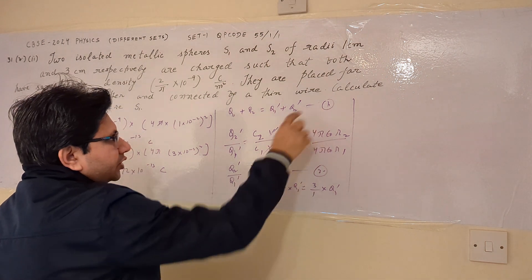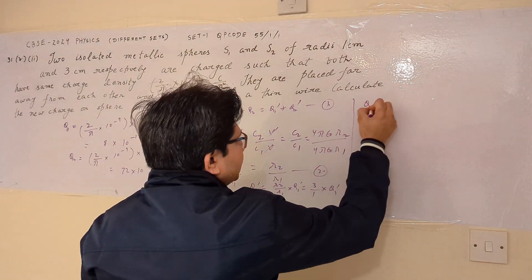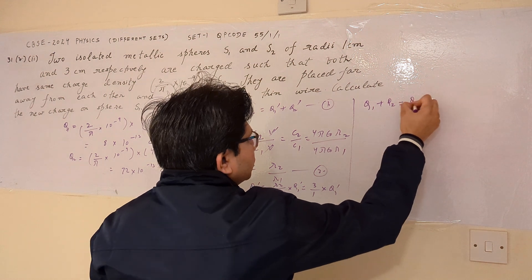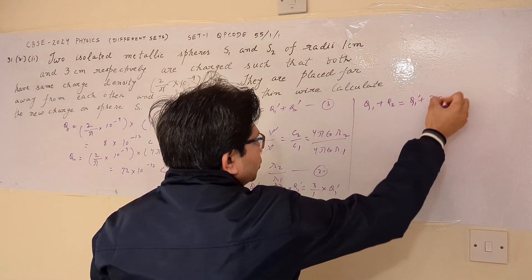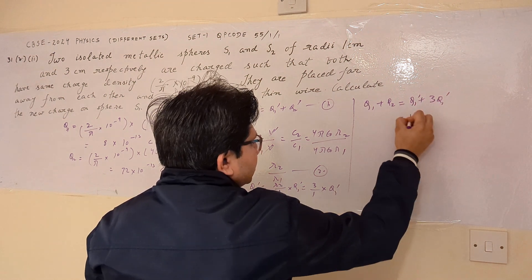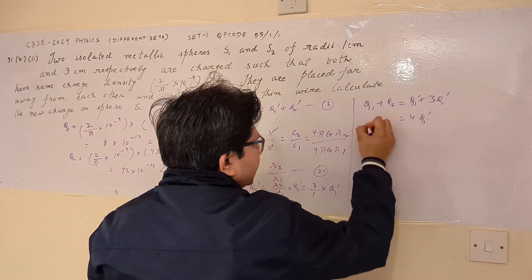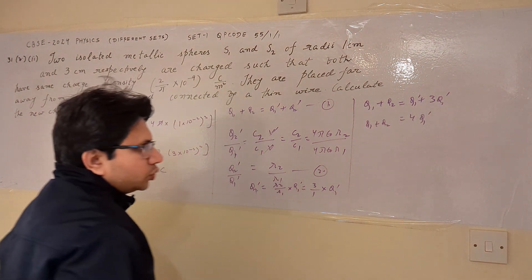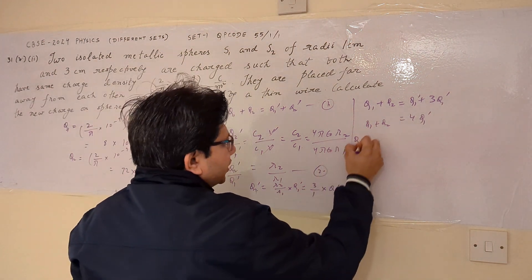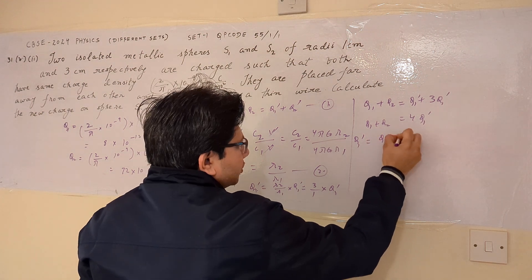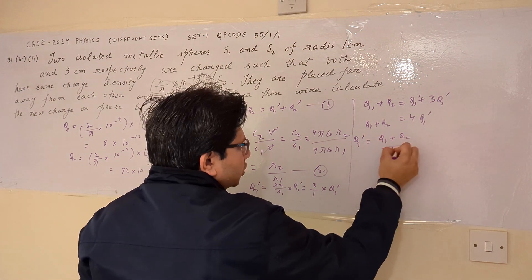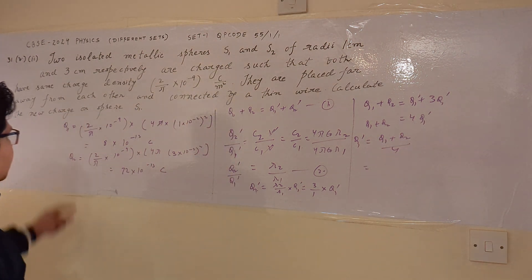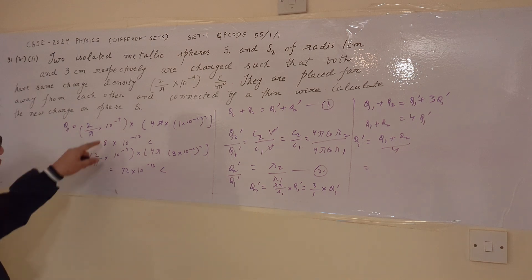Substituting into equation 1: Q1 + Q2 = Q1' + 3Q1' = 4Q1'. So Q1' = (Q1 + Q2) / 4, where Q1 + Q2 is the sum of the two original charges.